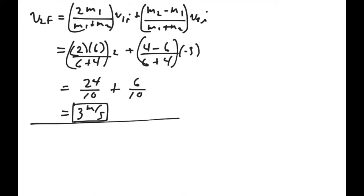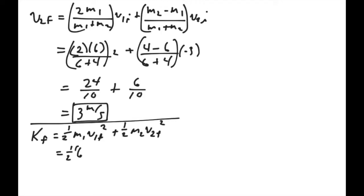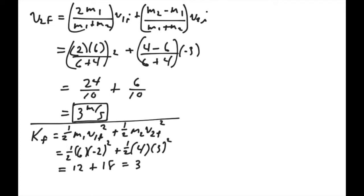We can now calculate the final kinetic energy of the system. The final kinetic energy equals one half mass one times V1 final squared, plus one half mass two times V2 final squared. So this is one half times 6 times negative 2 squared, plus one half times 4 times 3 squared. That's 3 times 4, which is 12, plus 2 times 9, which is 18. So we have 30 joules as our final kinetic energy. That's our answer to this problem.